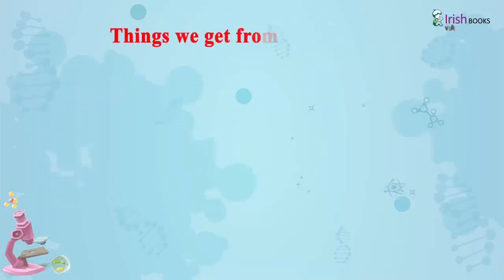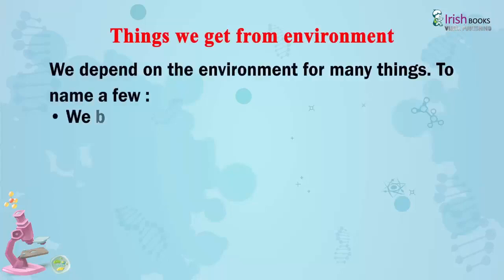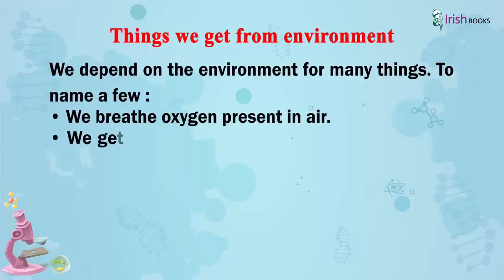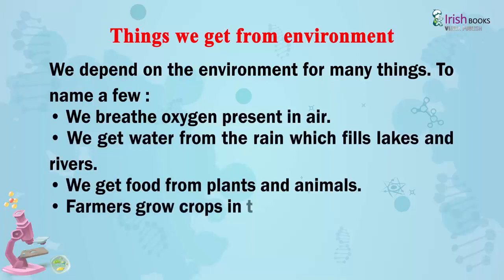Things we get from the environment. We depend on the environment for many things. To name a few: we breathe oxygen present in air, we get water from the rain which fills lakes and rivers, we get food from plants and animals, and farmers grow crops in the soil.